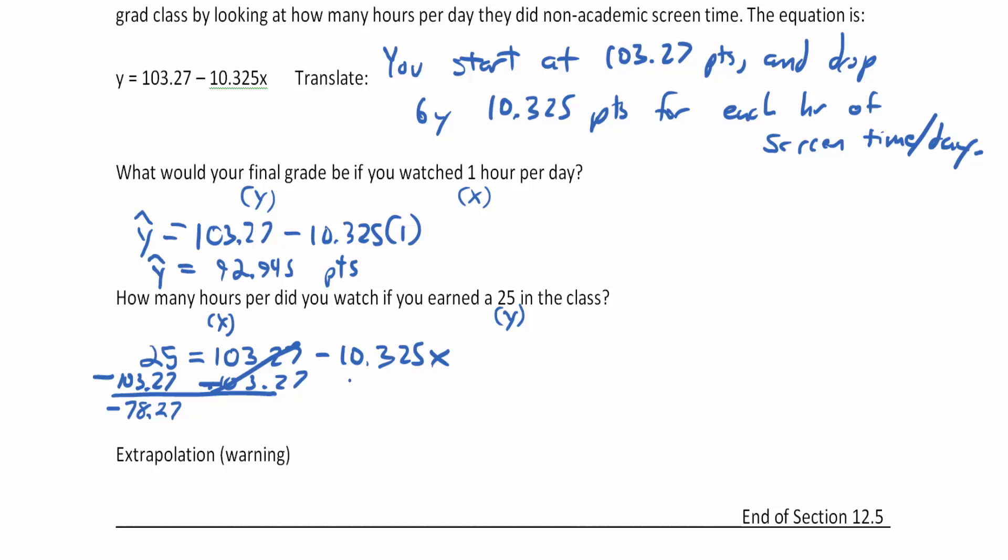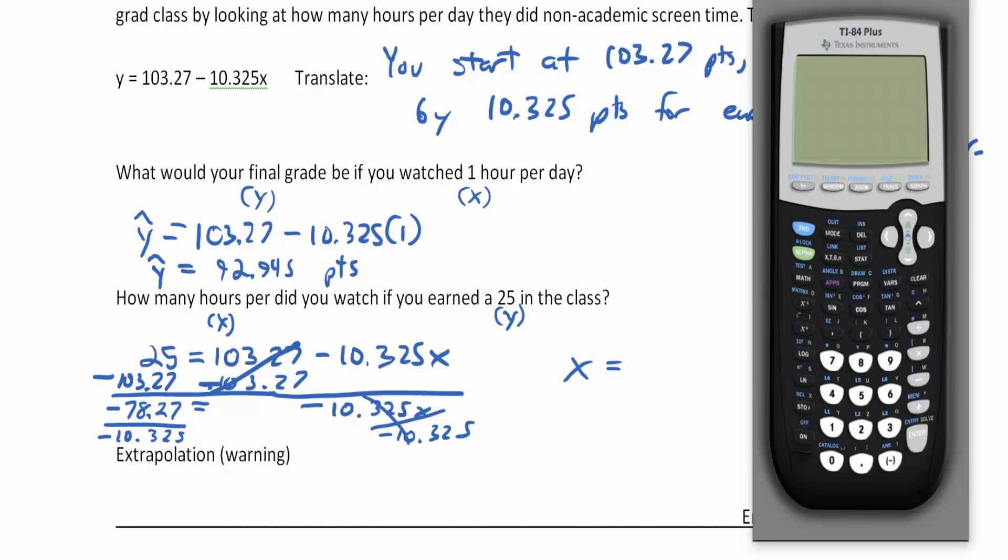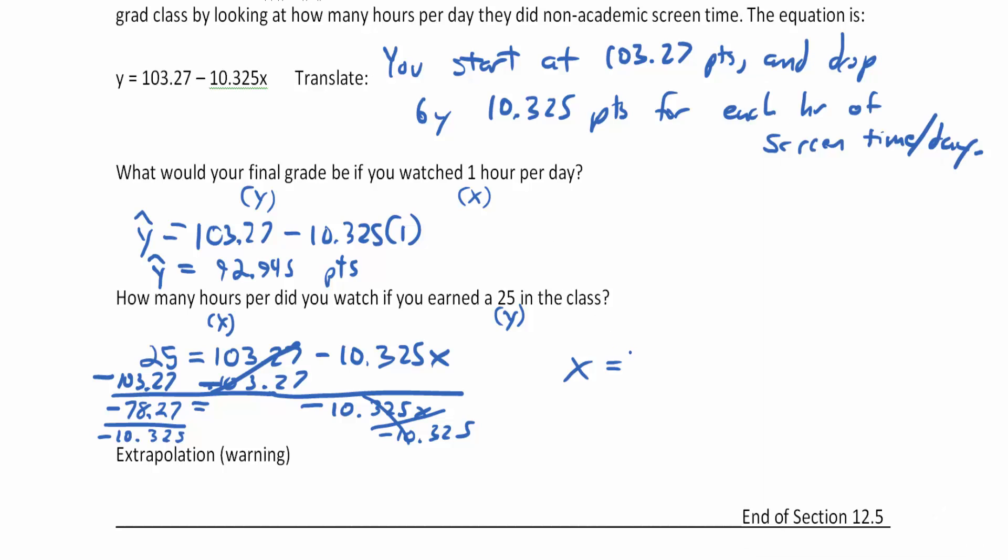Now we bring down the equal sign and the subtraction sign, which looks like a negative, and this is 10.325x. To get x by itself, divide both sides by negative 10.325. We need that subtraction sign as a negative because two negatives make a positive. Make sure you use the negative key on the calculator. This is negative 78.27 divided by negative 10.325. If you do those correctly, you get about 7.58 hours per day. So if you're spending all that time messing around instead of studying, you're going to be in trouble.